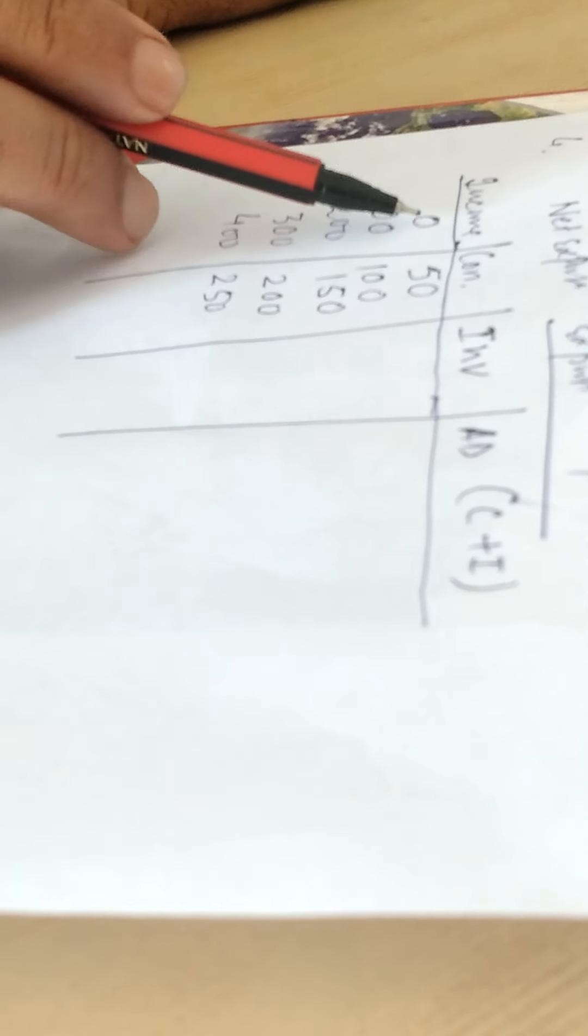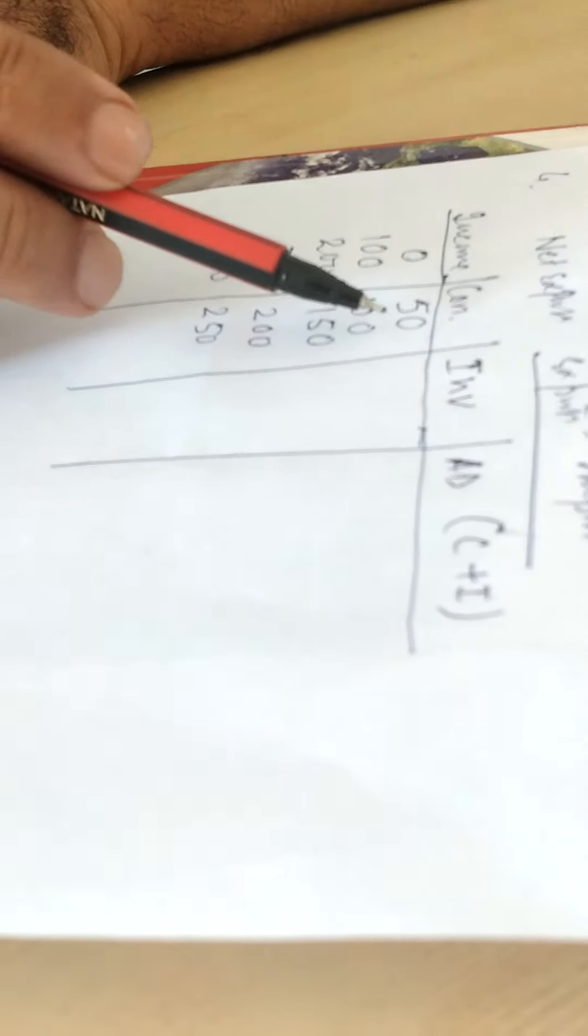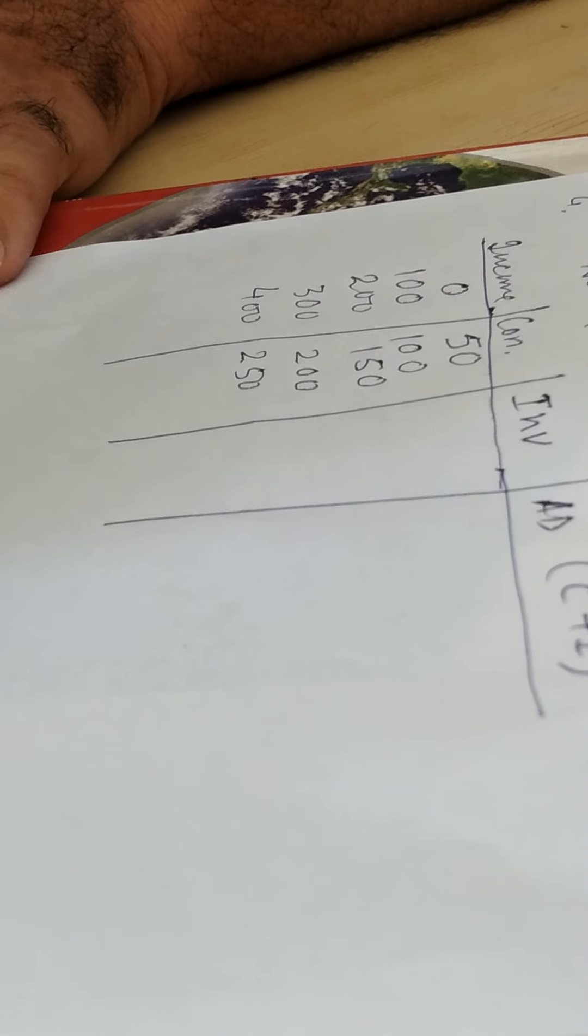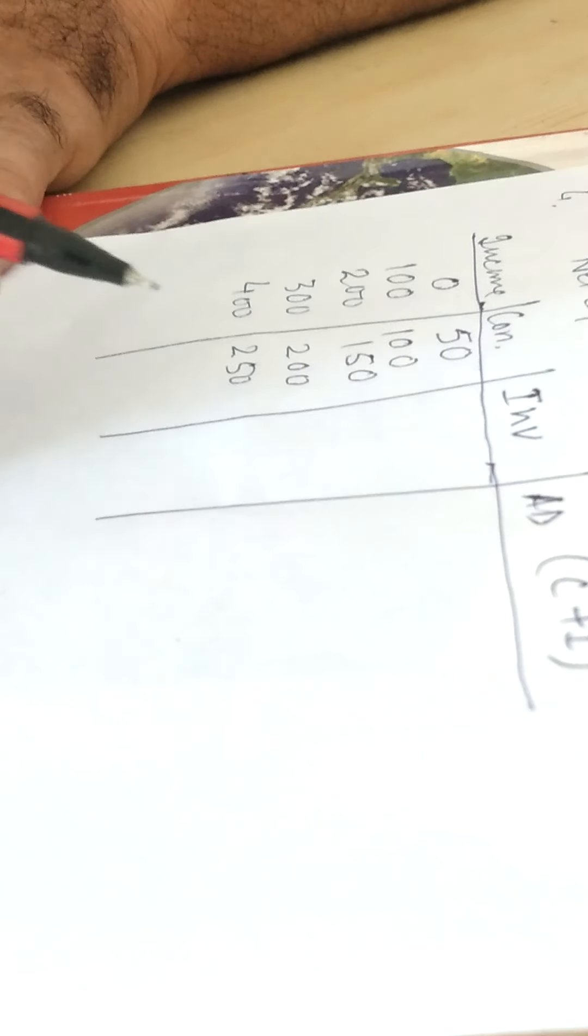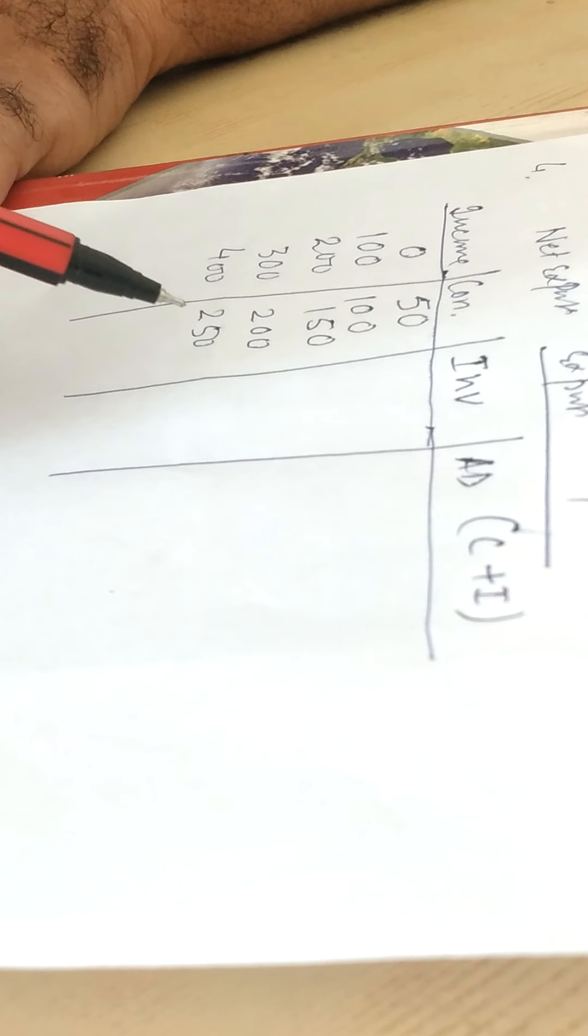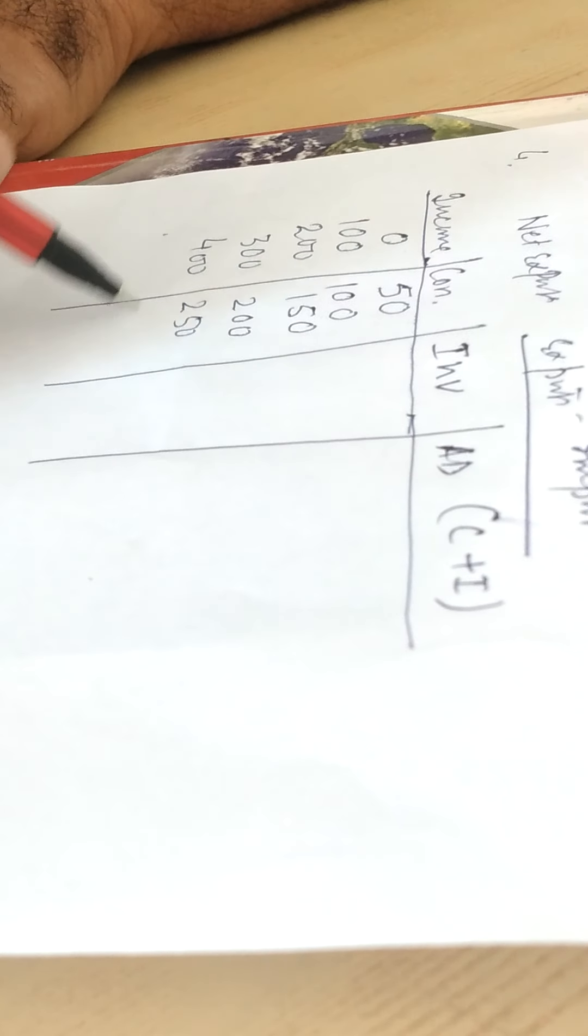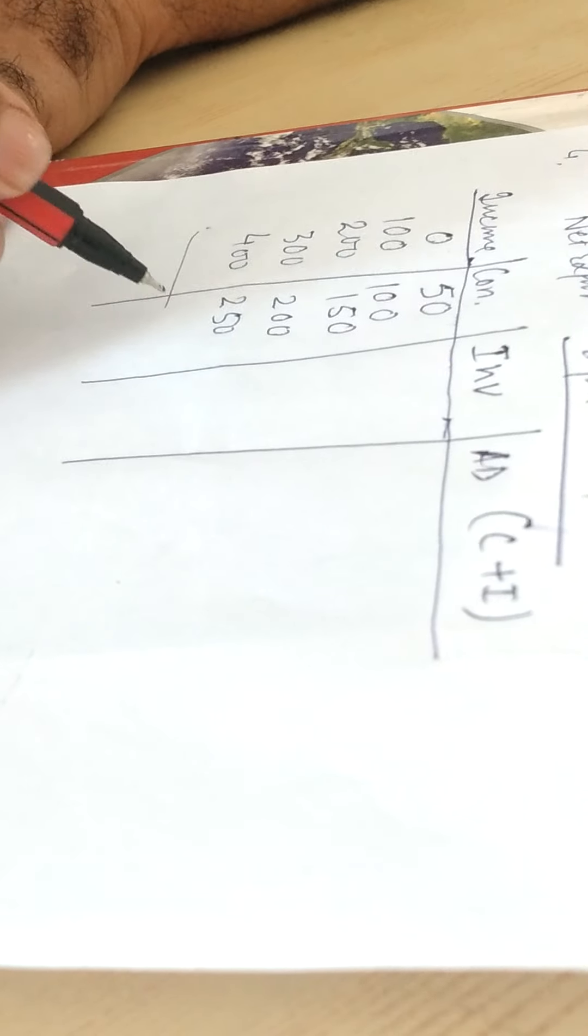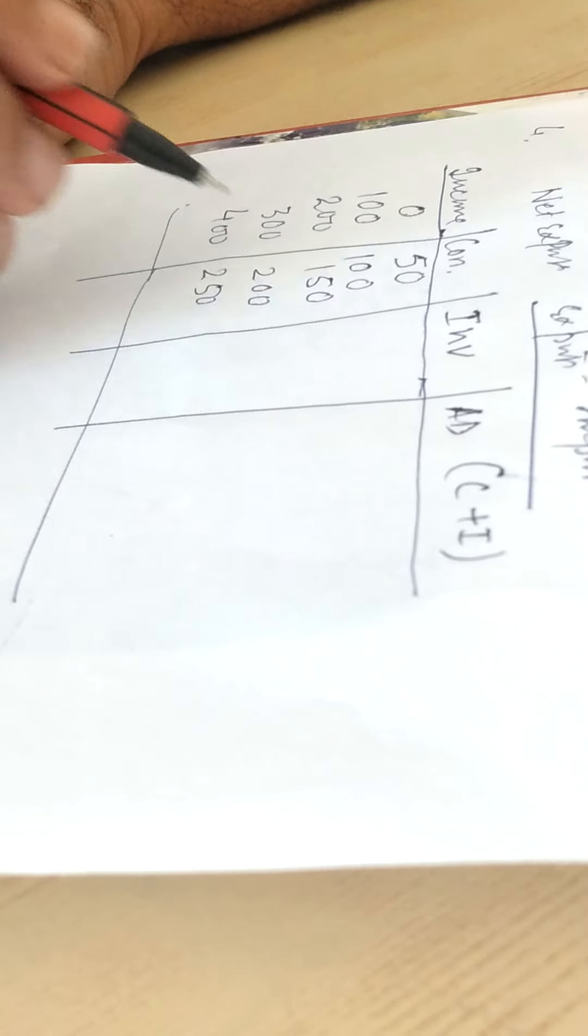Consumption is never zero because in order to survive we must eat something. Second conclusion from this table is when income increases, consumption also increases. But the rate of increase in income and rate of increase in consumption is not equal. The rate at which income increases and the rate of consumption increase is not proportionate, rather increase in consumption is less than increase in income.